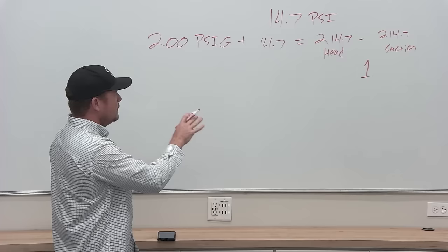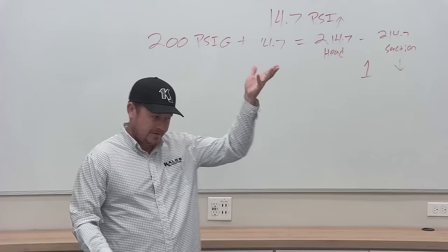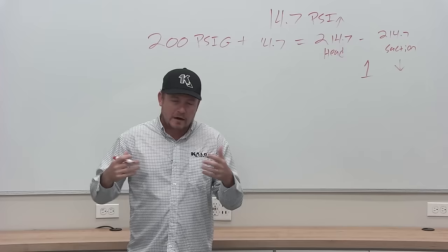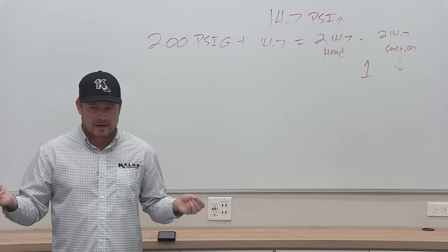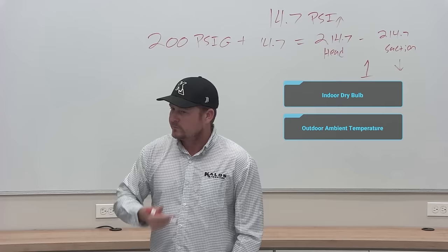When the system comes on, the head pressure goes up and the suction pressure goes down — that's what the compressor does; it creates a differential. You're rarely going to actually calculate compression ratio; you're going to look at other numbers to tell you what your head and suction should be. You look at your indoor return temperature and your outdoor ambient temperature — those are the two primary drivers of head pressure and suction pressure.